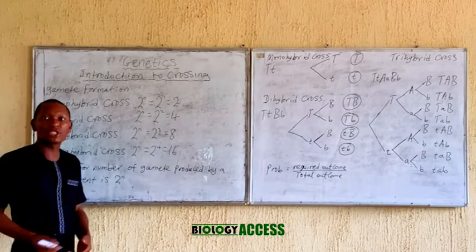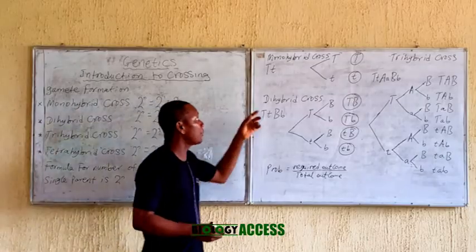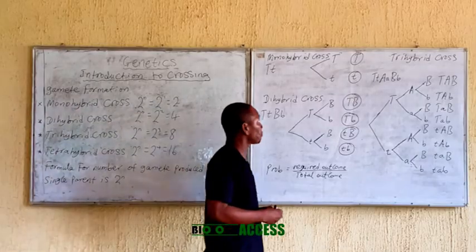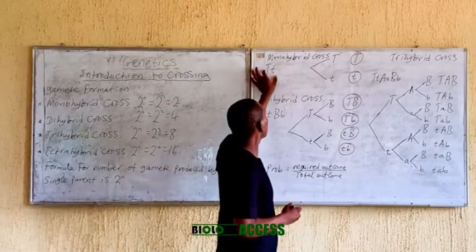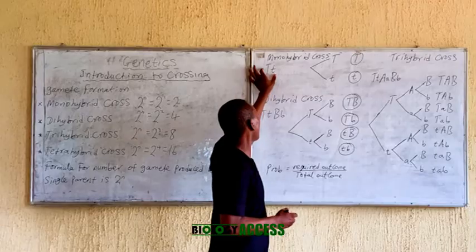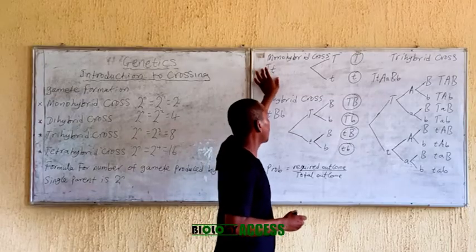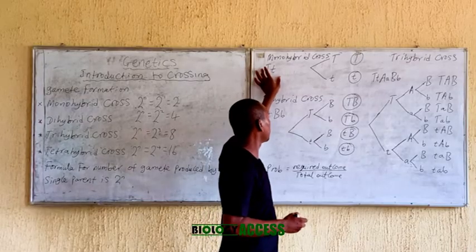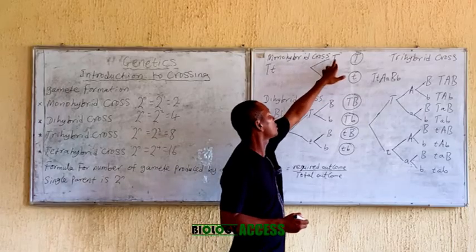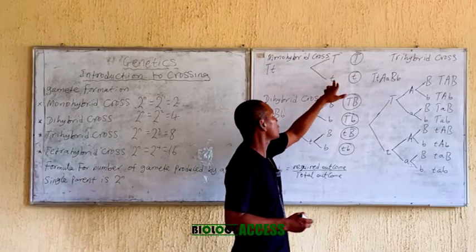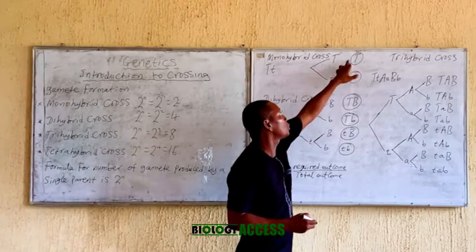So how do we form gametes? That means we want gamete formation. If this is the parent having a gene pair, the gametes that are formed are capital T and small t, and this is the gamete.